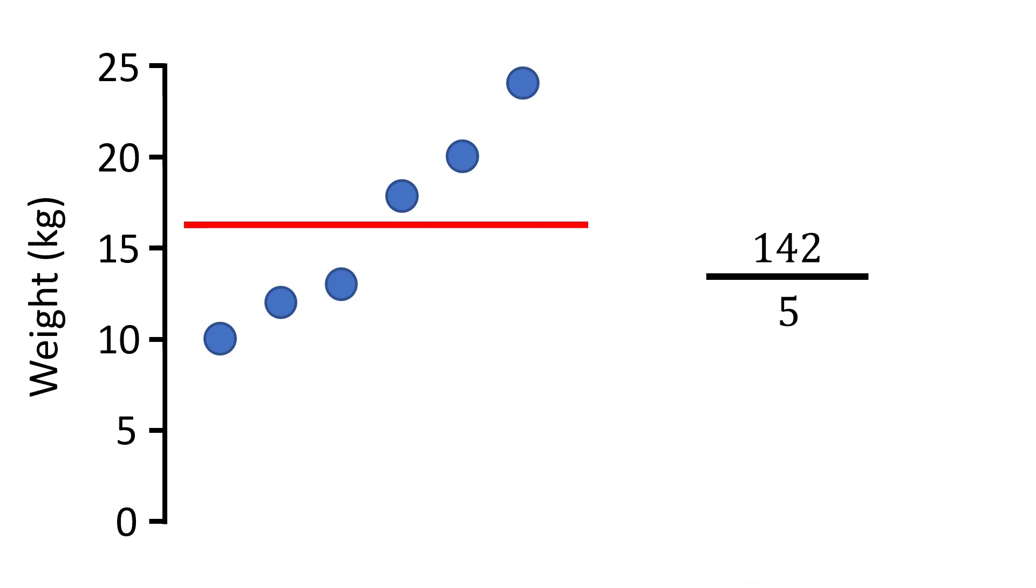So for the final step to calculate the variance for this particular sample we do 142 divided by 5. Doing so gives a variance value of 28.4.